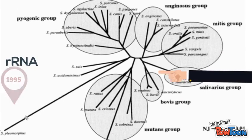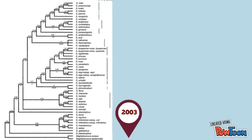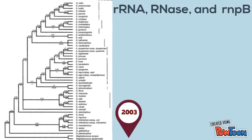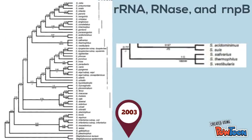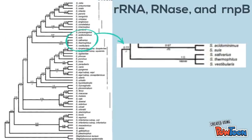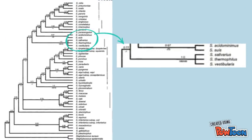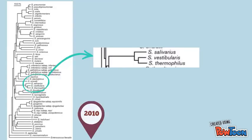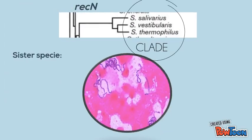In the year 2003, coding was done with RNA, RNase, and RNPB, and it shows the same relation as before. In the year 2010, coding was done with the gene REC-N, and it shows no variation. We can then affirm that the sister species is S. vestibularis.